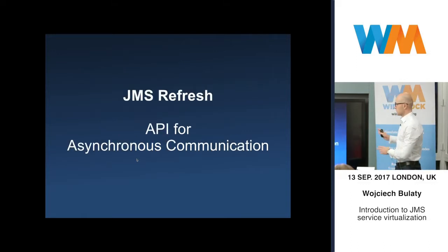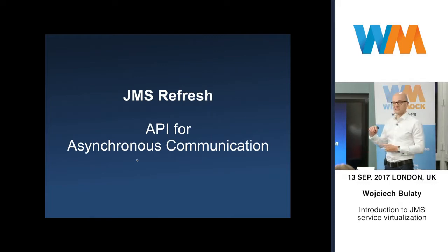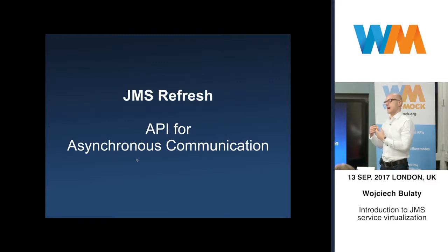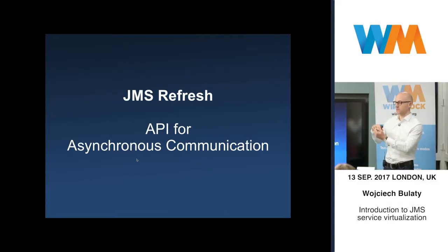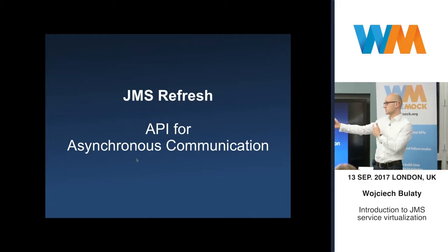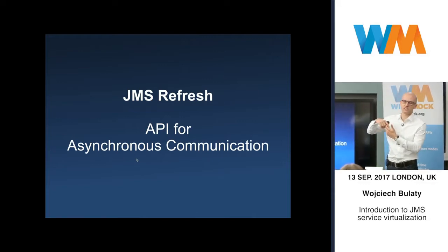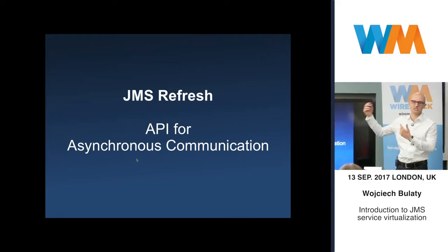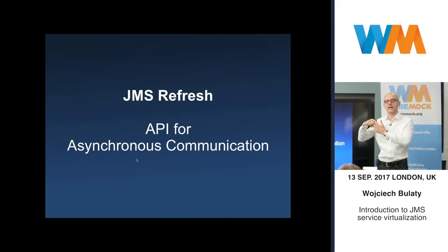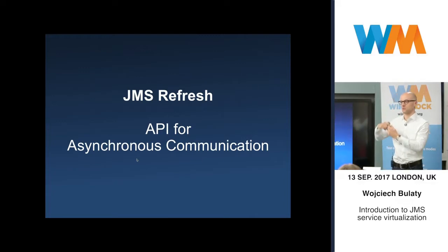A quick JMS refresh to start with: JMS is an API for asynchronous communication. If you're doing HTTP, you're going to send a request and synchronously wait for a response — HTTP 200, HTTP 404. You're synchronously waiting for that response. What happens in JMS is different.